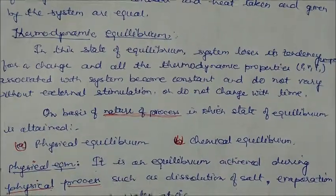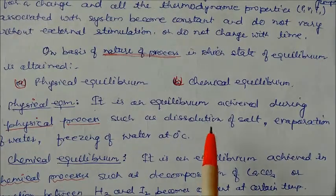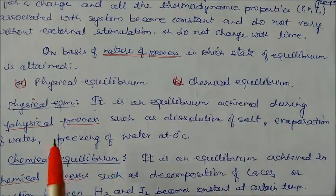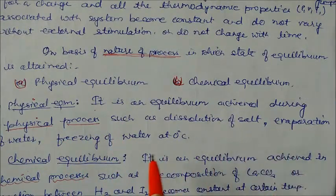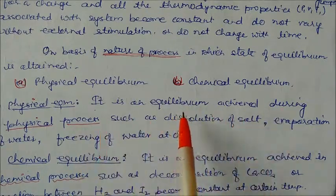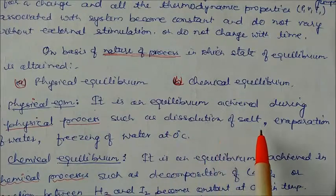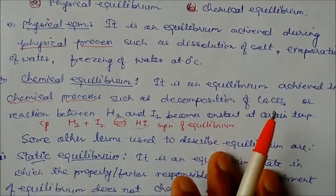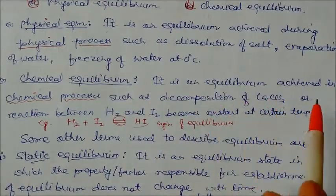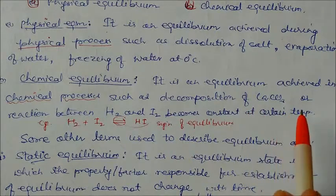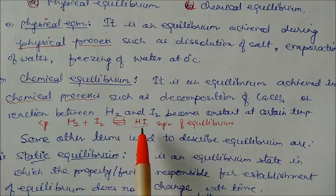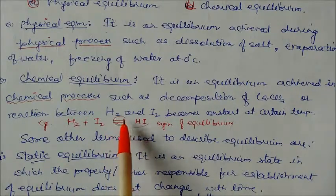On the basis of the nature of the process by which equilibrium is attained, there are two types: physical equilibrium and chemical equilibrium. Physical equilibrium is achieved during a physical process, such as dissolution of salt, evaporation of water, or freezing of water at zero degrees centigrade. Chemical equilibrium is achieved in a chemical process, such as decomposition of calcium carbonate or the reaction between hydrogen and iodine reaching equilibrium at a certain temperature: H₂ + I₂ ⇌ 2HI. This double-arrow sign is the sign of equilibrium.